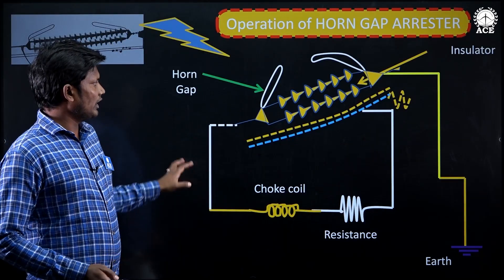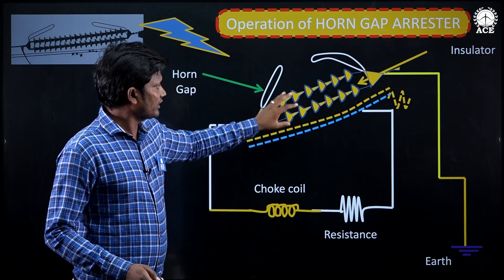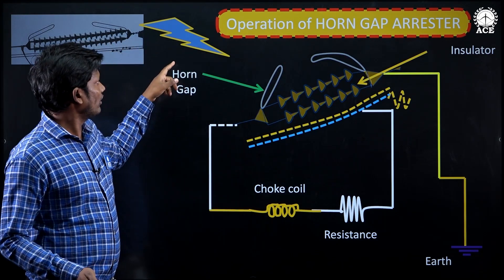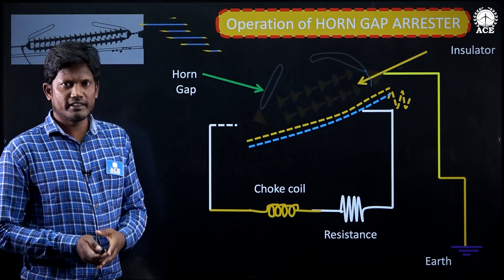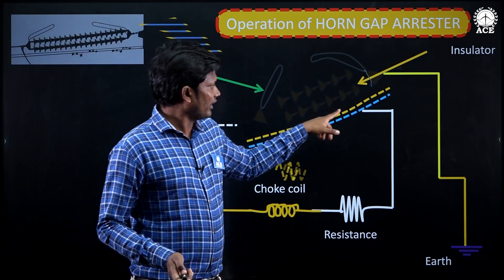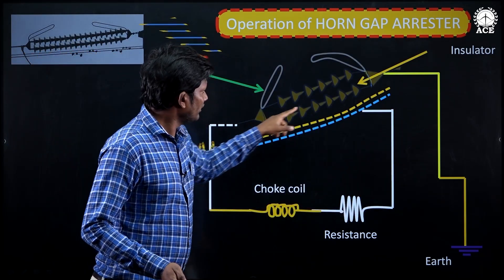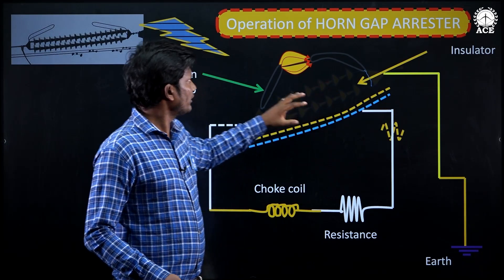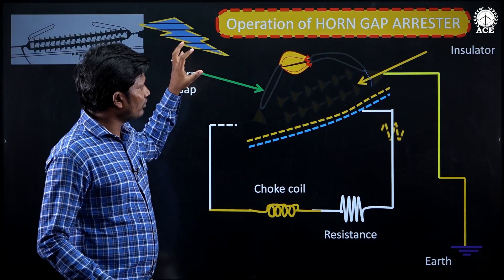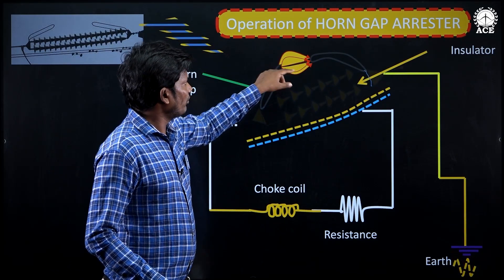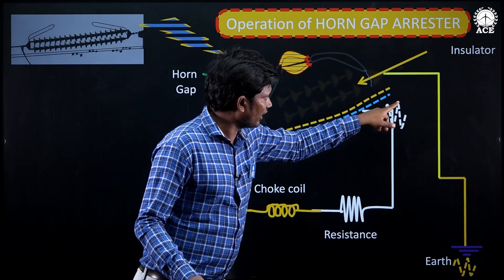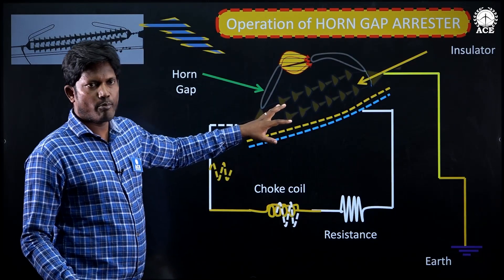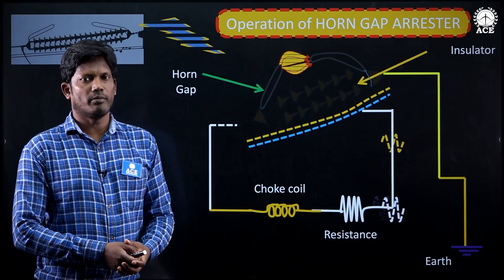Operation of the horn gap: without horn gap, when lightning strikes on an overhead transmission line, the voltage increases and diverts from the line to ground through the insulator, and due to such high voltage the insulators may get damaged. In order to protect the insulators, we use the horn gap arrestor. With horn gap, due to high voltage, the arc is formed between the horn gap and the high voltage diverts from line to ground through the horn gap instead of through the insulator. In this way, we protect the insulators and the transformers from the lightning.